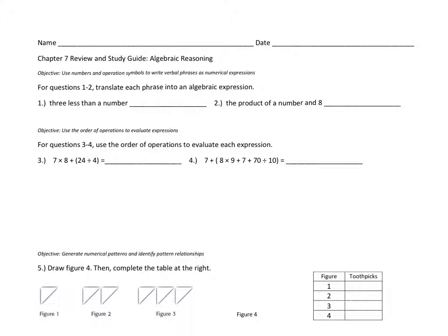In this video, I'm going to go over our Chapter 7 Review and Study Guide. This is over algebraic reasoning, and this is from the 5th grade McGraw-Hill My Math series. On this study guide, I have listed all of our key objectives, and then given a couple of example problems for each objective.